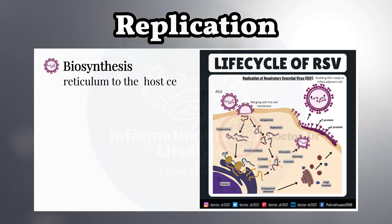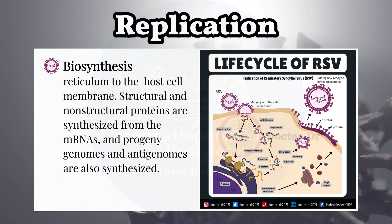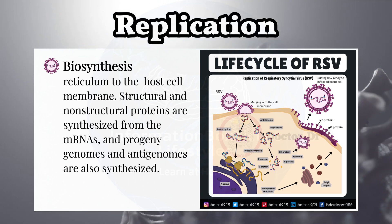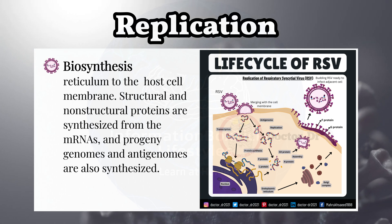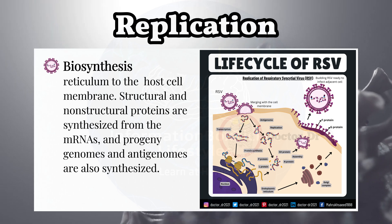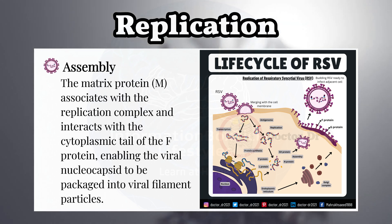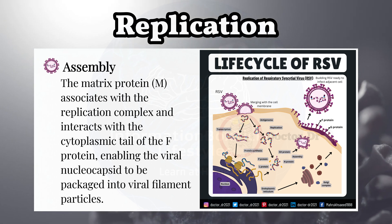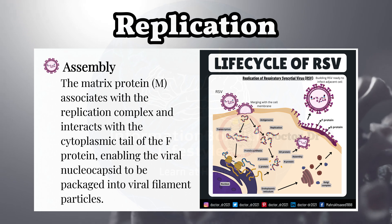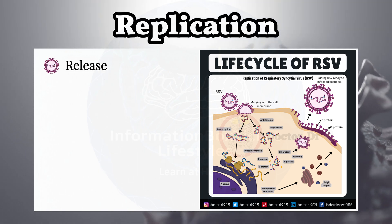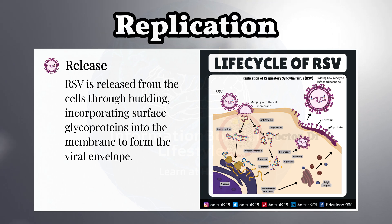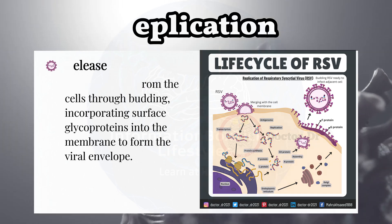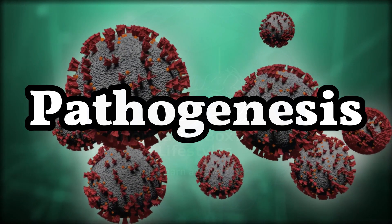Structural and non-structural proteins are synthesized from the mRNAs, and progeny genomes and antigenomes are also synthesized. Assembly: The matrix protein M associates with the replication complex and interacts with the cytoplasmic tail of the F-protein, enabling the viral nucleocapsid to be packaged into viral filament particles. Release: RSV is released from the cells through budding, incorporating surface glycoproteins into the membrane to form the viral envelope.